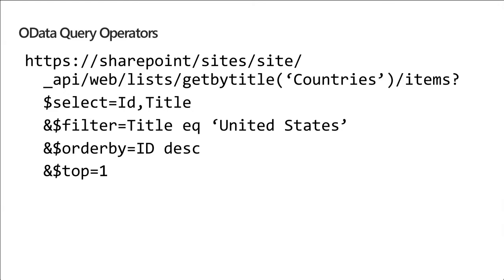Here we can see the SharePoint REST API URL structure. We're going to a SharePoint site, and then the REST API portion uses '_api/web/lists/getbytitle' to get a reference to a specific list, then navigate to the items collection. We have four different parameters: $select limits the columns we get back, $filter is like a WHERE clause, $orderby gives us sorting options, and $top limits the amount of data returned.